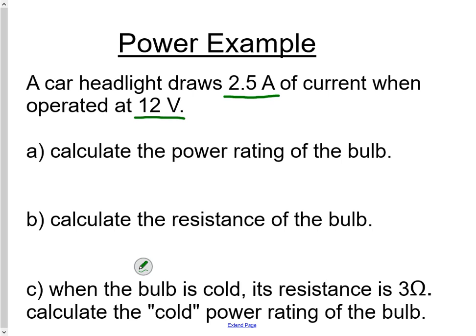So we have power is equal to current times voltage, which we know the current is 2.5 amps and we know the voltage is 12 volts. We're going to multiply those two and we get 30 watts of power.